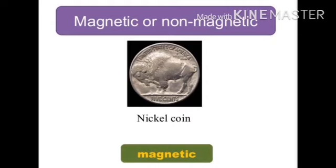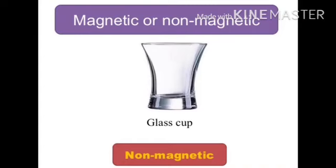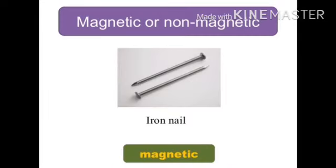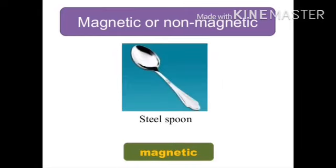A coin made of nickel is magnetic, so it is attracted towards the magnet. A glass cup is non-magnetic — it cannot be attracted towards the magnet. A gold ring is non-magnetic. An iron nail is magnetic because iron is attracted towards the magnet. A steel spoon is magnetic because steel is attracted towards the magnet.